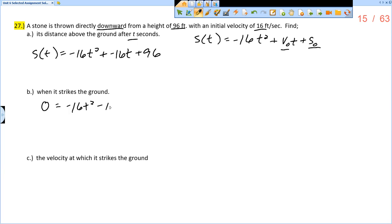So negative 16t squared minus 16t plus 96 equals 0. And so now this is just some algebra. I'm going to start by factoring out negative 16. So I get t squared plus 1t minus 6. And so now I can divide by negative 16, so I have 0 equals t squared plus t minus 6.